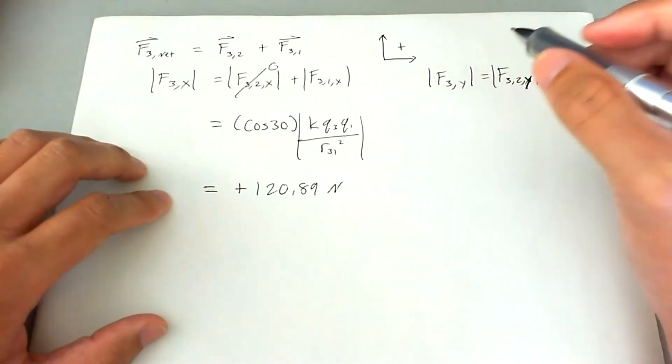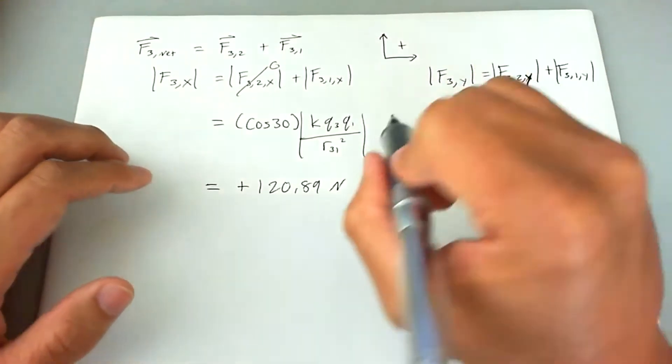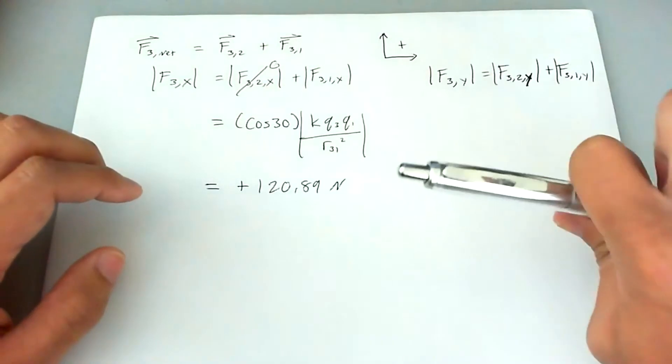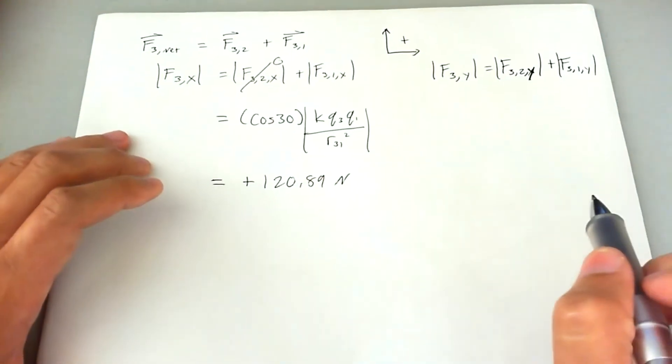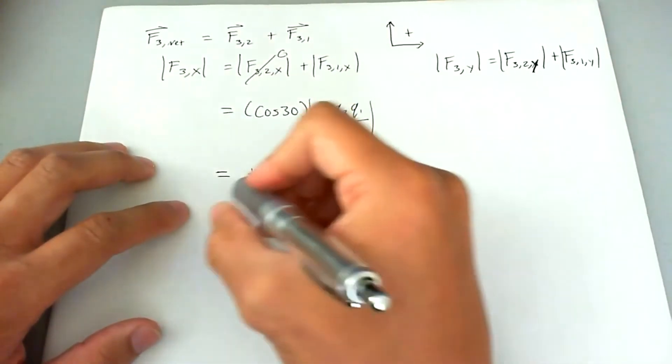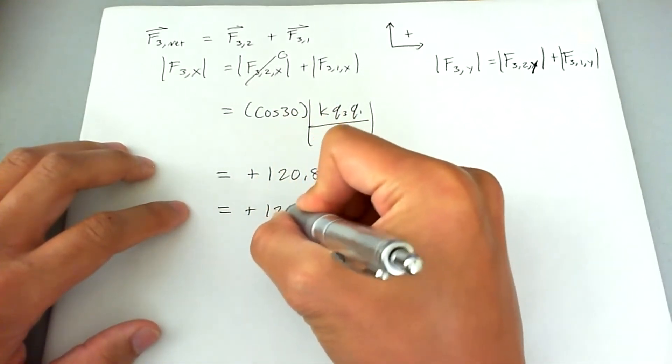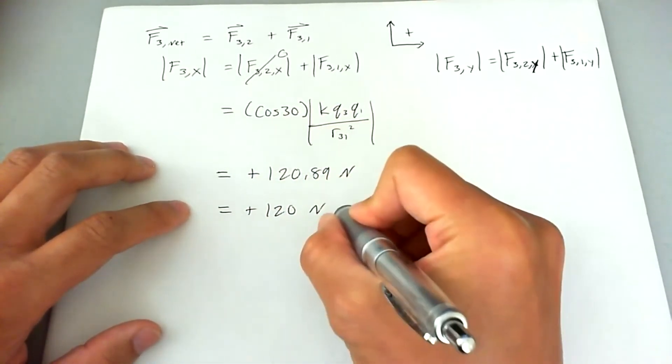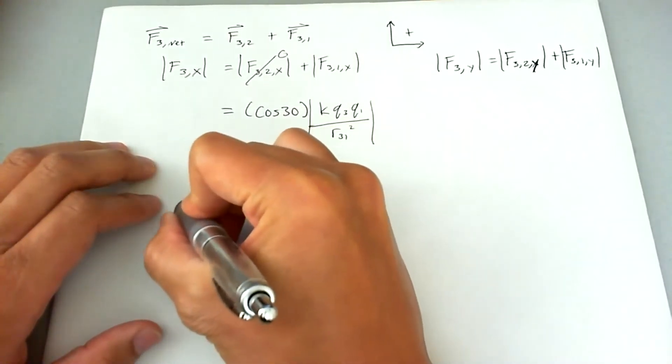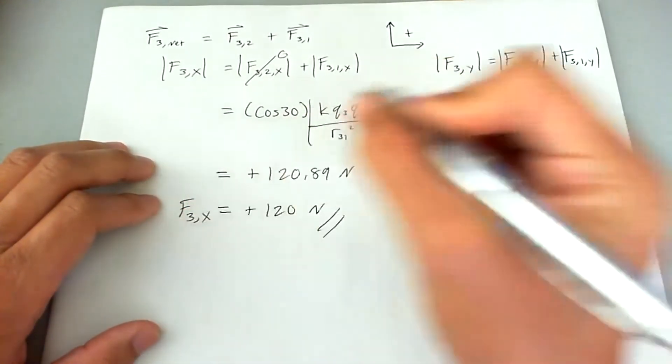So we know that charge one is making charge three go to the right, it's forcing it to the right, therefore it is a positive value. Using significant figures to our advantage, we'll go ahead and just say this is 120 newtons and that's two sig figs right there. And that's the force acting on charge three in the x direction.